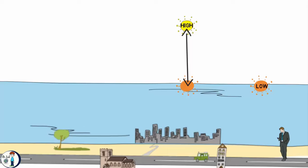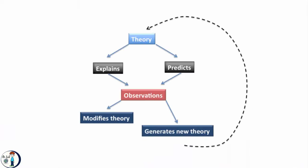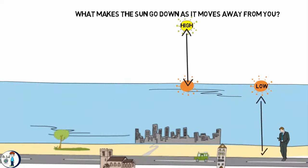Now, the question is, what makes the sun go down as it moves away from you? There are a few theories about this, but they can all be wrong. But let us explain one theory.